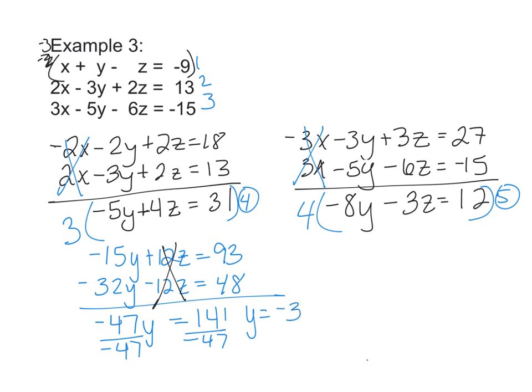So I'm going to take that, plug it into equation 4 or 5, and find z. So -8 times -3 - 3z = 12. 24 - 3z = 12, subtract 24, -3z = -12. So z is equal to 4.